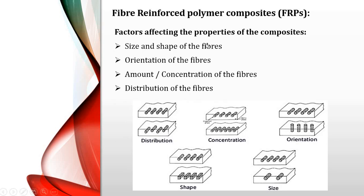Some factors affecting the properties of composites are: the size and shape of the fibers (whether short or long), their orientation (direction of arrangement), their concentration or amount, and their distribution — that is, how many fibers are embedded in the matrix.